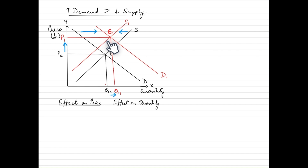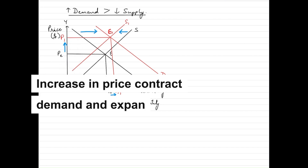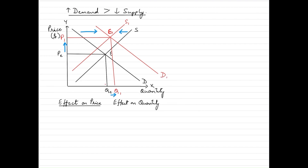In order to bring the quantity demanded and supplied back to equilibrium, the price should rise. When the price rises, it will discourage some consumers from buying the commodity or service and encourage some producers to supply more of it. So the overall impact on price is that the price goes up from Pe to P1.